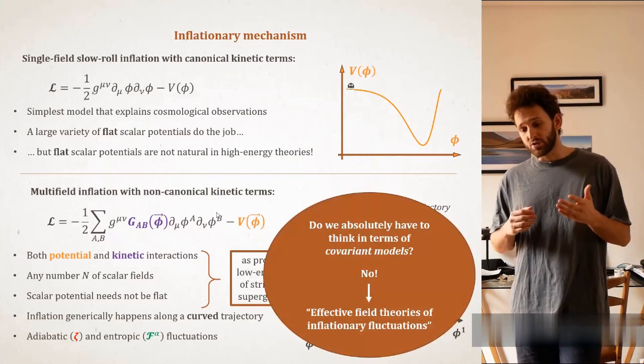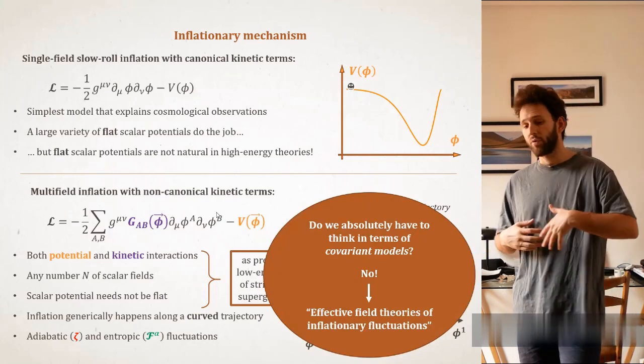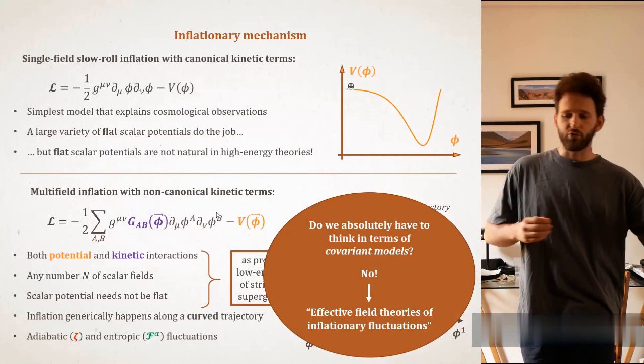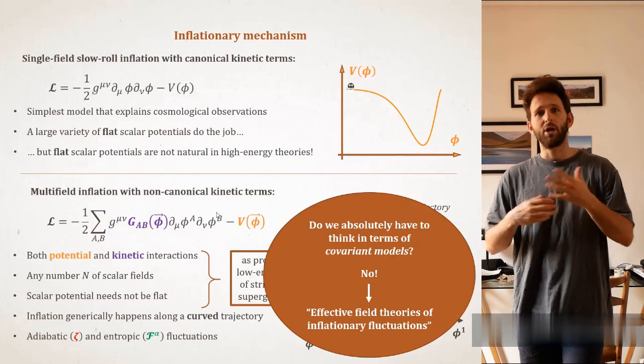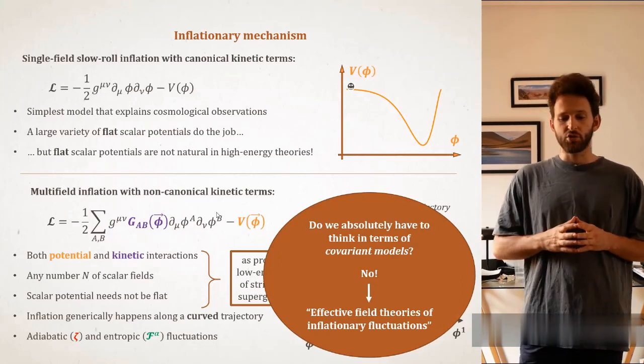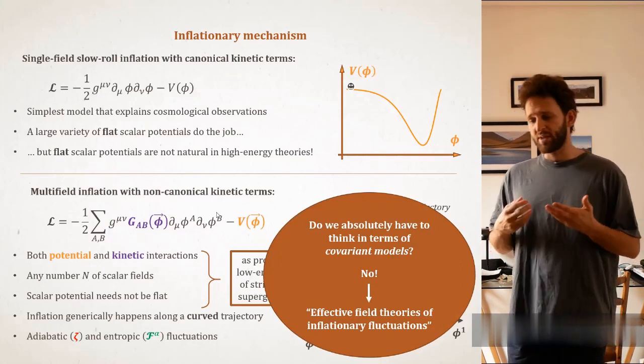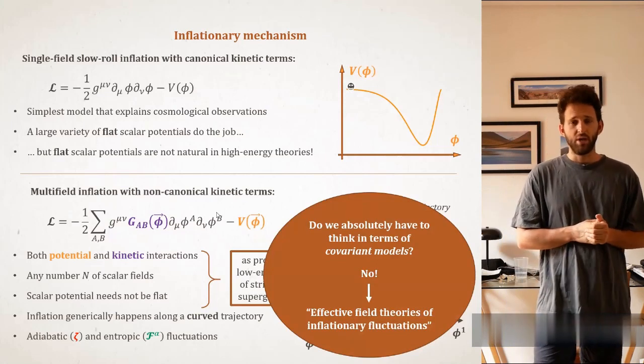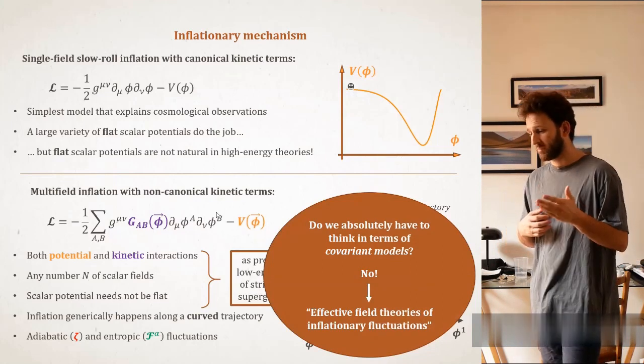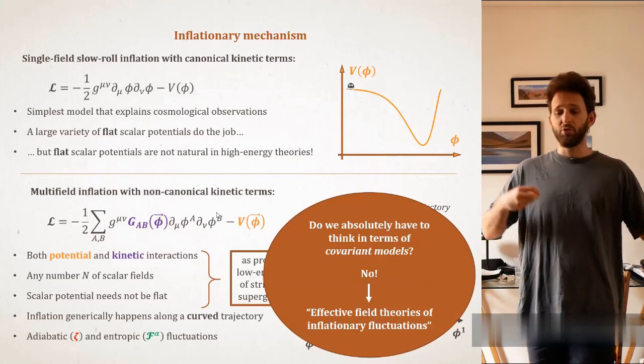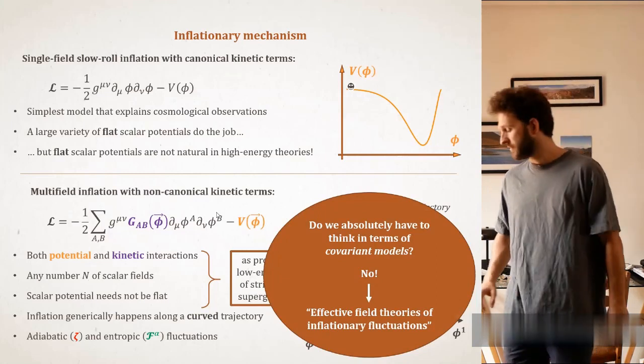Now, just a small comment, that we actually not necessarily need to rely on those covariant models of inflation that provide both the inflationary background and the statistics for the fluctuations that we can compare to observations. We have a framework, which is called the effective theory of inflationary fluctuations, that enables to bypass the model-by-model approach and to encompass some model-independent results. As I will show, this has no impact on the talk that I am giving, since both with covariant models and with effective theory of fluctuations, we recover the same kinds of multifield interactions.